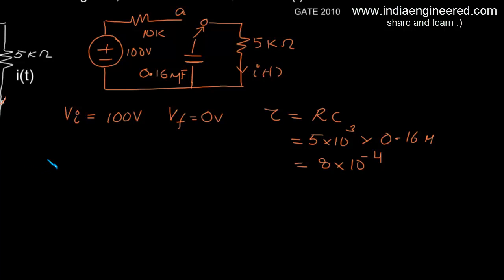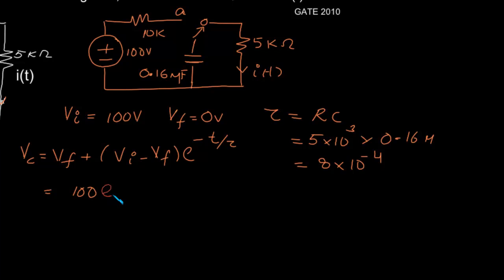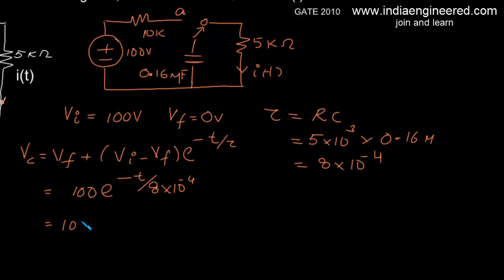The equation for a capacitor discharging through a resistor is an exponential decay. The general equation is: voltage across the capacitor equals V final plus (V initial minus V final) times e to the power of minus t over tau. That means V(t) equals 100 e to the power of minus t divided by 8 times 10 to the minus 4, which is 100 e to the power of minus 1250t.